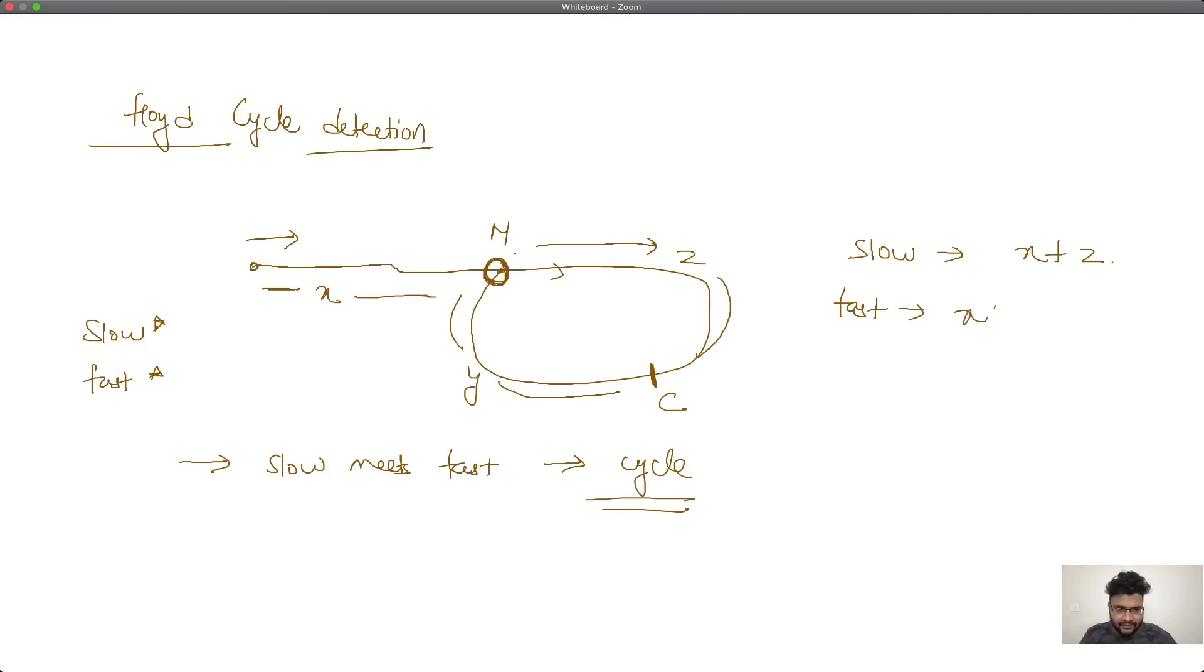According to the logic, 2 times slow should equal fast in terms of distance, because fast is covering twice the distance of slow. So, 2x plus 2z equals x plus 2z plus y. Now this 2z and 2z will cancel out, x will go down to this side, and x equals y. So this distance x is equal to distance y.